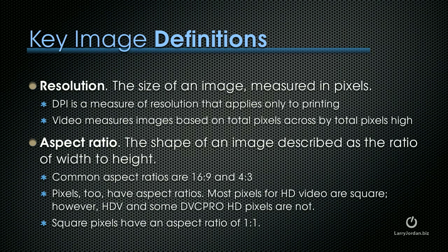Video measures images based upon the total number of pixels across the width by the total number of pixels high — the height. The aspect ratio is the shape of an image described as the ratio of its width to its height, and common aspect ratios are 16 by 9 and 4 by 3.